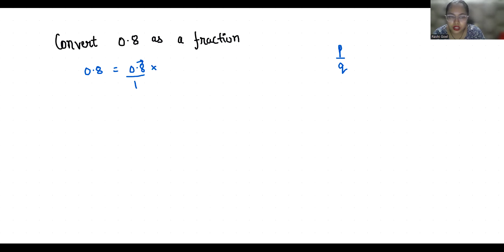There is one digit after the decimal, so we will multiply by 10 in numerator as well as denominator. So 0.8 times 10 by 1 times 10. The numerator becomes 8 and denominator is 10, so 8 by 10. Now we are going to reduce it.